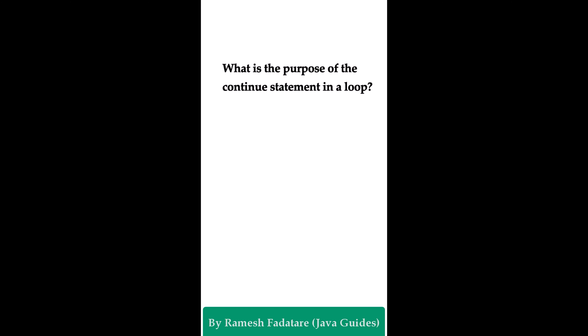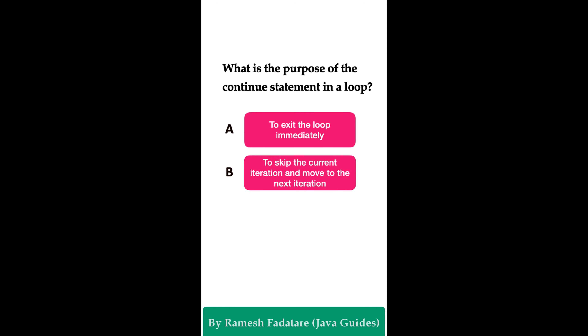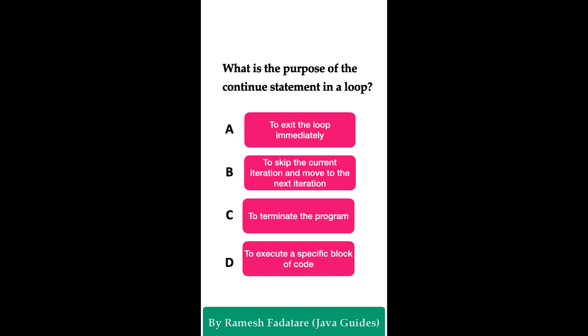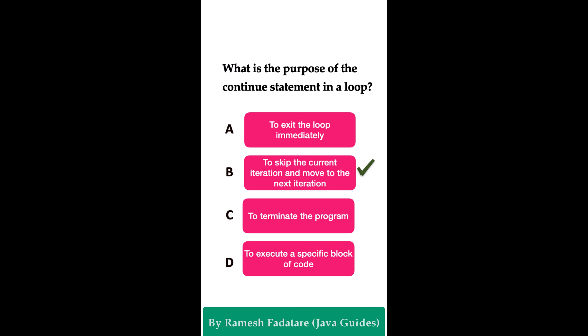What is the purpose of the continue statement in a loop? Option A: to exit the loop immediately. Option B: to skip the current iteration and move to the next. Option C: to terminate the program. Option D: to exit a specific block of code. The correct answer is option B — to skip the current iteration and move to the next iteration. The continue statement skips the current iteration and proceeds to the next iteration of the loop.